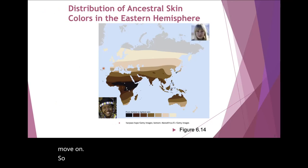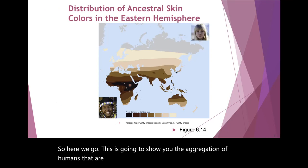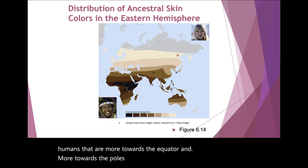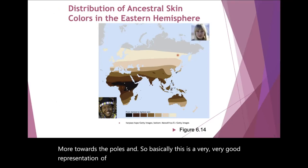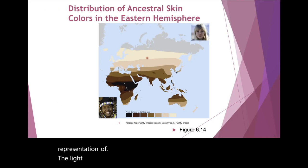This diagram shows the aggregation of humans more towards the equator and more towards the poles — a very good representation of the lightest to the darkest skin tones in terms of where they're located on Earth.